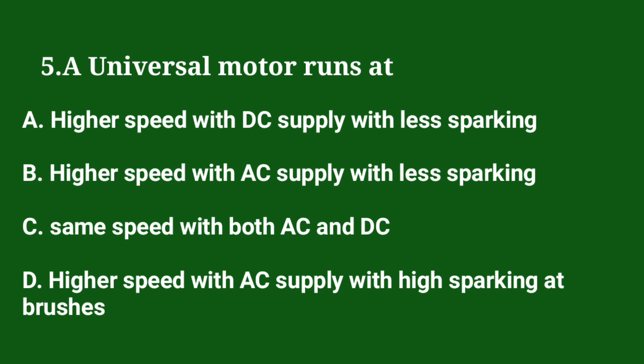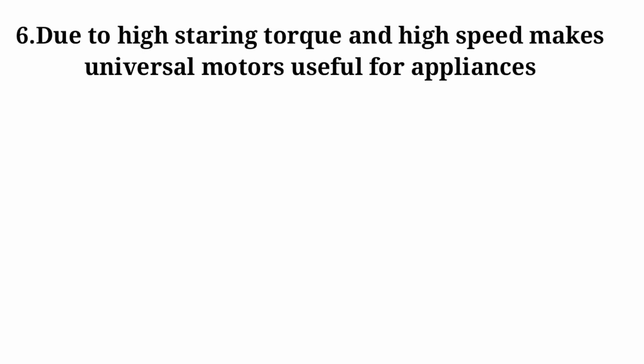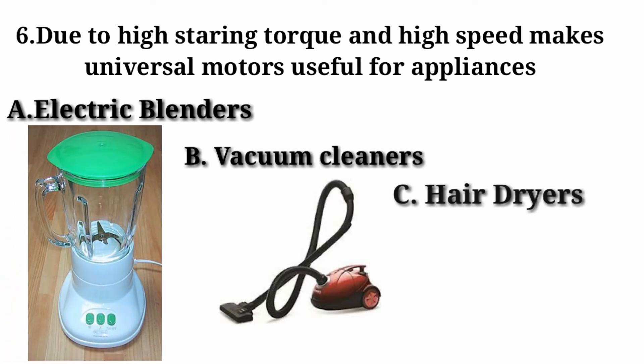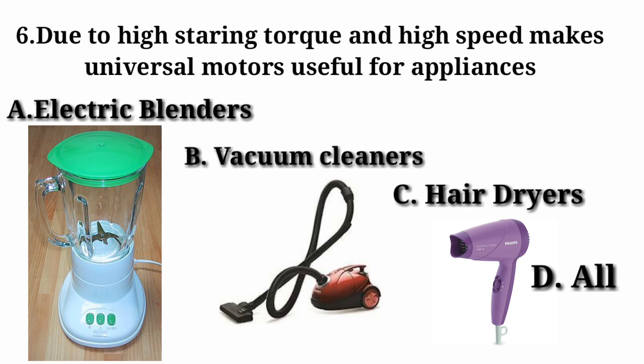Question 5: A universal motor runs at — A) higher speed with DC supply with less sparking, B) higher speed with AC supply with less sparking, C) same speed with both AC and DC, D) higher speed with AC supply with high sparking at brushes. The answer is A — higher speed with DC supply with less sparking, because sparking is low with DC. Final question for you: Due to high starting torque and high speed, the universal motor is useful for which appliances? A) Electric blender, B) Vacuum cleaner, C) Hair dryer, D) All of the above. Comment your answer below.